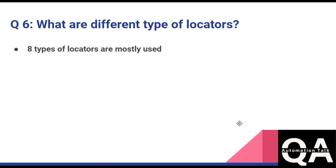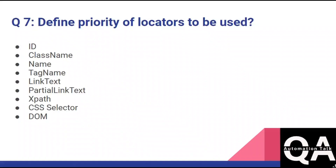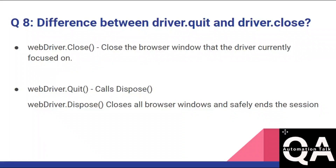We have eight types of locators that we mostly use in Selenium. The next question defines the priority of locators. The hierarchy is: first priority is ID, then class name, then name, tag name, link text, partial link text, XPath, CSS, and then DOM. This is the recommended priority order for selecting locators.